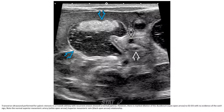This is an ultrasound performed for pyloric stenosis in a three-week-old boy with recurrent vomiting, showing no pyloric abnormality. However, there is marked distension of the duodenum to the D2-D3 level with no evidence of peristaltic signs, nor normal superior mesenteric artery and superior mesenteric vein relationship.